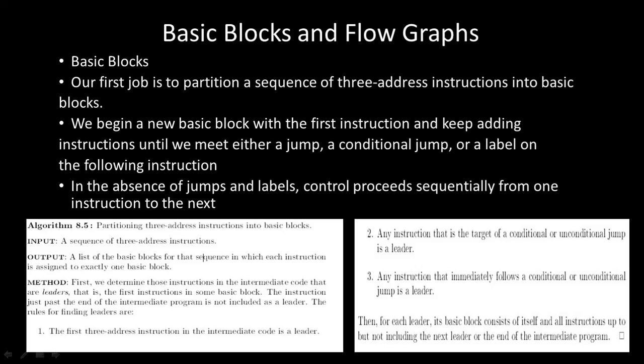The rules for finding leaders are as follows. First rule: the first three-address instruction in the intermediate code is a leader. Second rule: any instruction that is the target of a conditional or unconditional jump is a leader. Third rule: any instruction that immediately follows a conditional or unconditional jump is a leader. Using these three rules, we find the leaders and create the sequence of blocks.